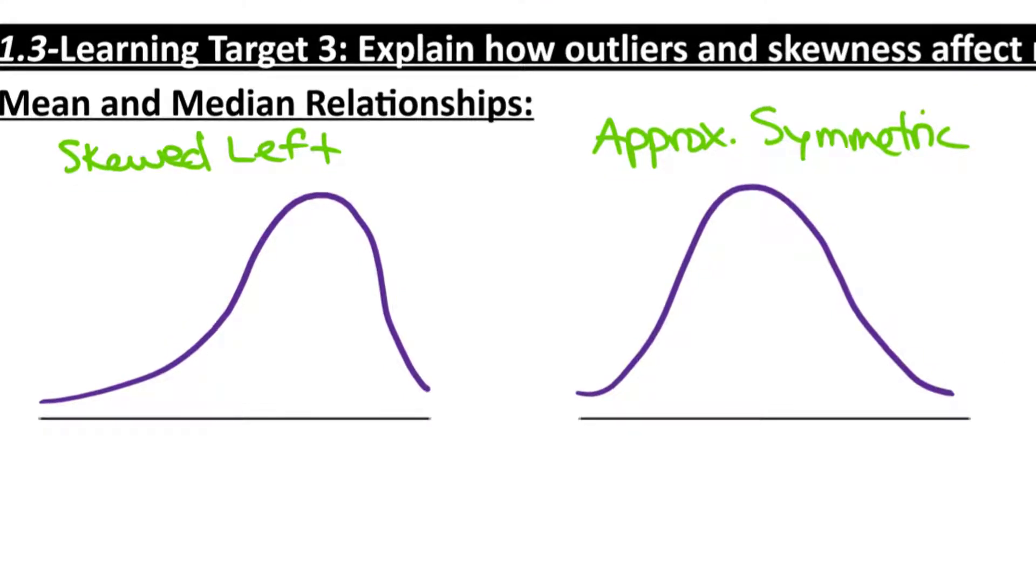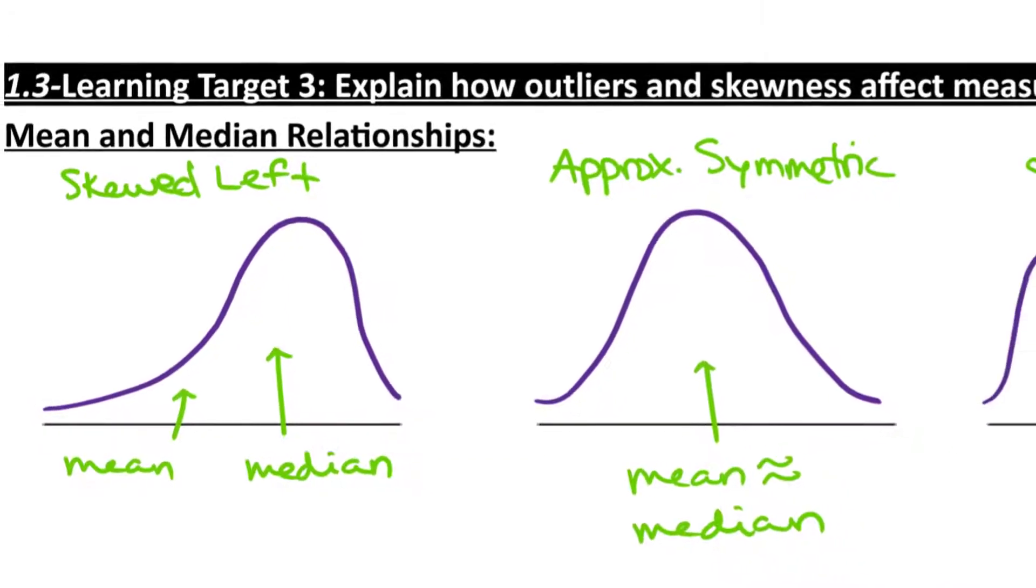Your approximately symmetric distribution is nice and balanced. Here, your mean will be approximately equal to your median. And then the skewed left distribution is just the reverse of the skewed right. Our median will be over here towards the peak. And the mean will be definitely to the left of the median.